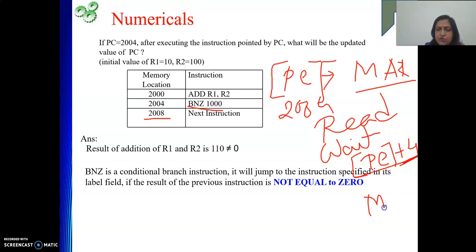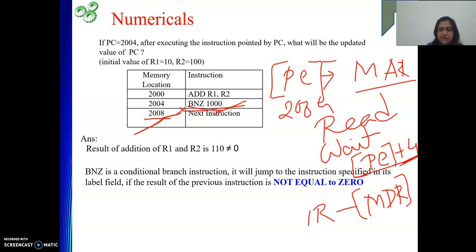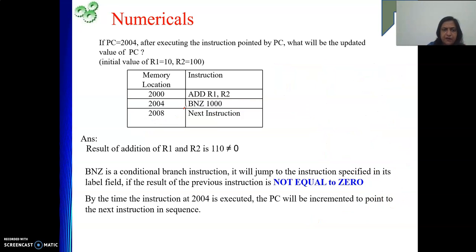Before the instruction reaches MDR and then IR for decoding and execution, the PC is already incremented. So while executing this instruction, the value of PC is 2008. With this 2008 we add the offset 1000, giving PC = 2008 + 1000 = 3008. So the answer is 3008.